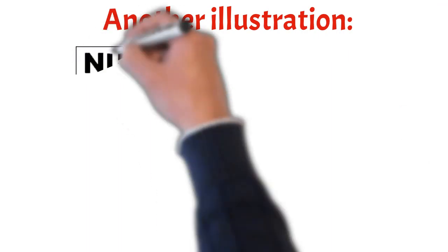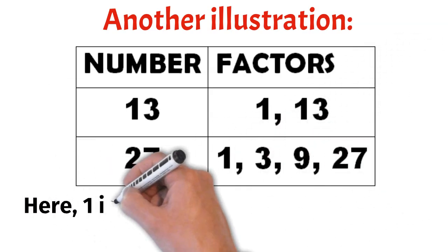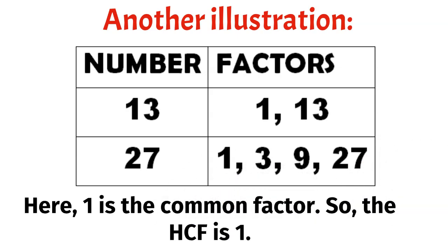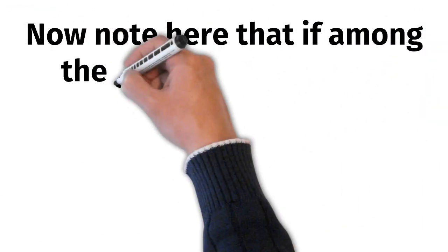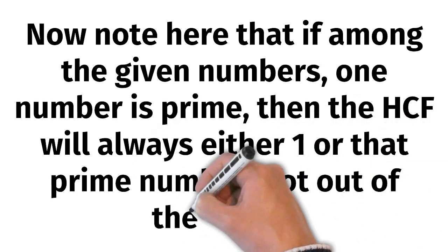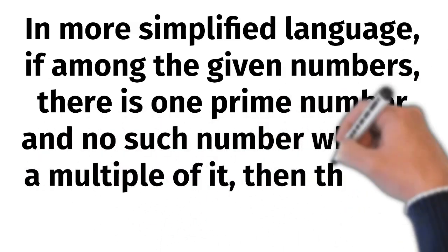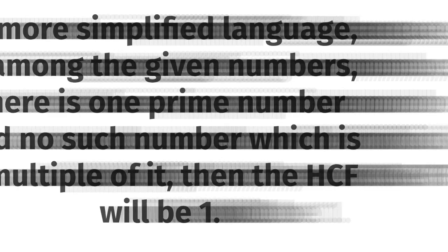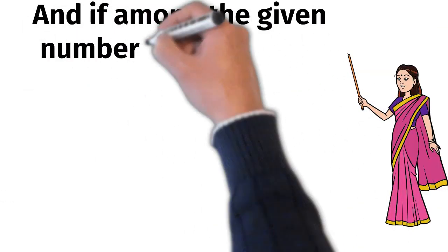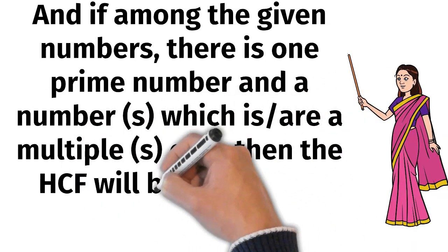Let's take another example. Number 13 has factors 1 and 13. Number 27 has factors 1, 3, 9, 27. Here, 1 is the only common factor, so the HCF is 1. We can say that if among the given numbers one number is prime, then the HCF will always be either 1 or that prime number. If there is one prime number and no number which is a multiple of it, then the HCF will be 1. And if there is one prime number and a number which is a multiple of it, then the HCF will be that prime number.